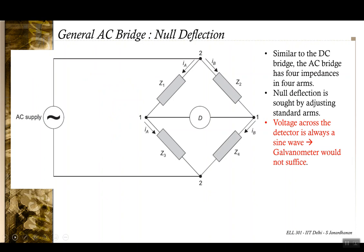The basic concept of an AC bridge is very much similar to the construction of a Wheatstone's bridge. The AC bridge also has four arms with a detector connected across these arms. However, instead of the arms being simple resistances, there are four impedances Z1, Z2, Z3, Z4, one of which is the unknown impedance, and instead of a DC supply you have an AC supply.